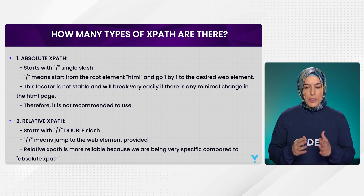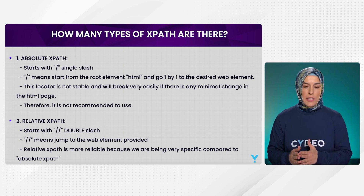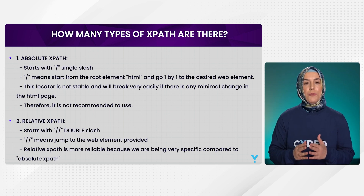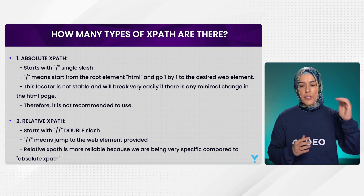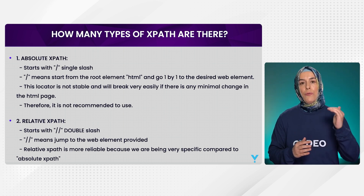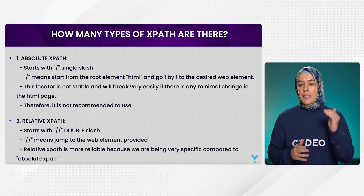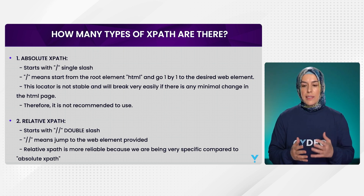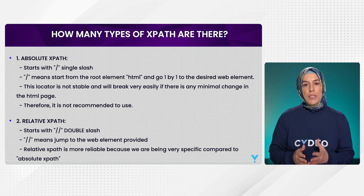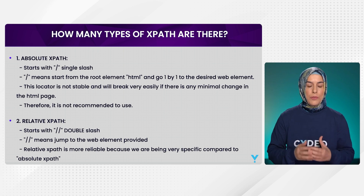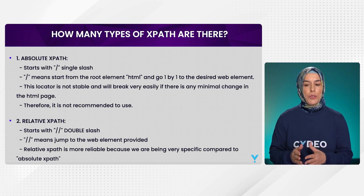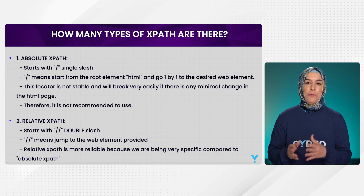Absolute XPath is starting with a single slash. It means it starts from the root element, which is HTML, and it goes one by one to the desired web element. This locator is not stable, and it will break easily if there is any minimal change in the HTML page. So that's why it's not recommended to use it, and we are not using absolute XPath.